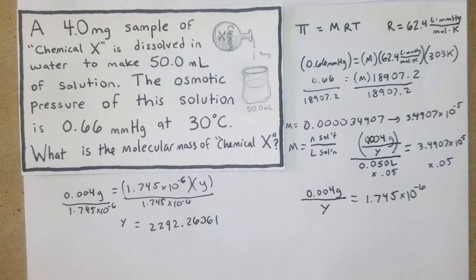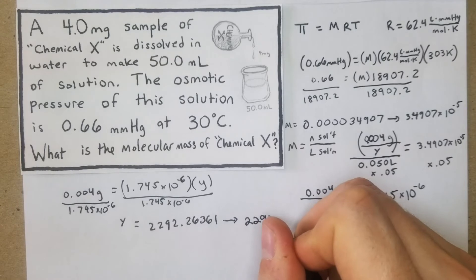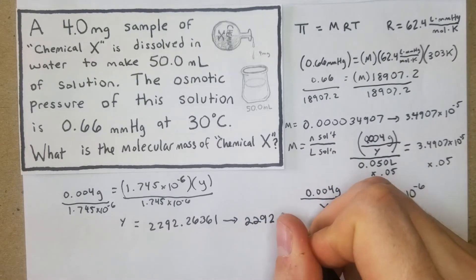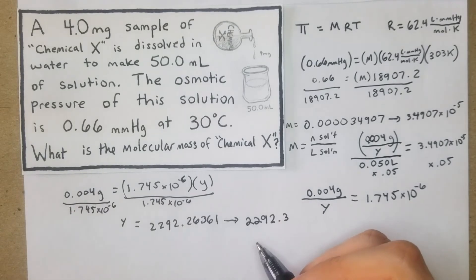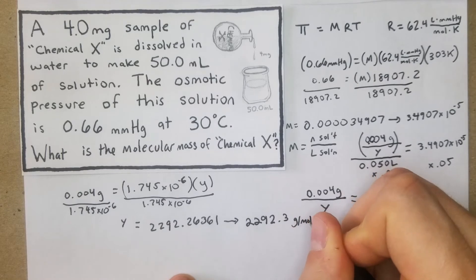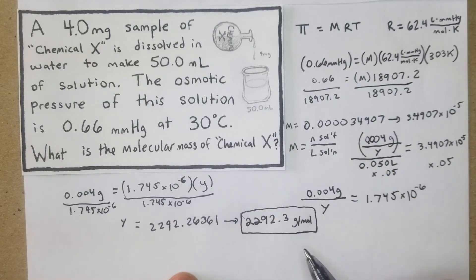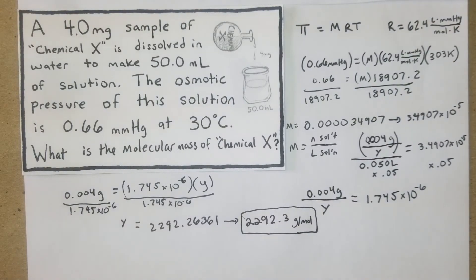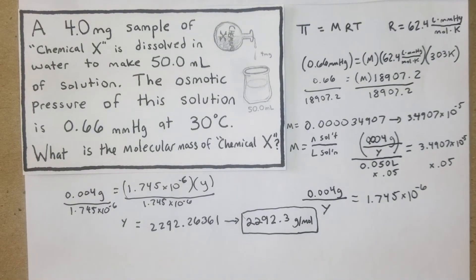Cool, so now what we got - our variable that we called y is going to be 2292.26361. Let's make that a little bit more pretty: 2292.3, and that's going to be grams per mole. So right there we just found the molar mass of chemical X. That's kind of the first phase of this problem, and now we're going to take it one more phase with our next question.